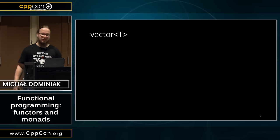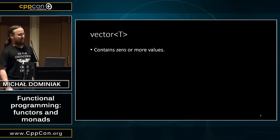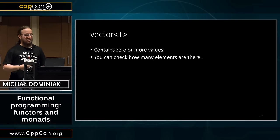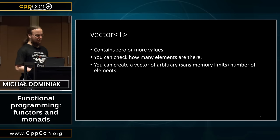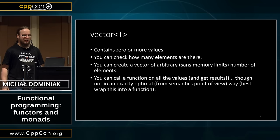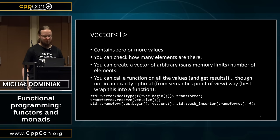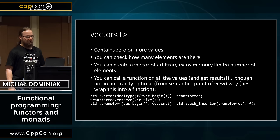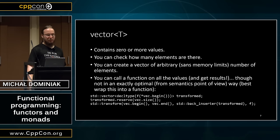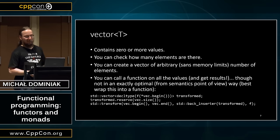Next we have a vector. A vector contains zero or more values. You can check how many values are there. You can create a vector of an arbitrary number of elements. And you can call a function on all the values — that looks something like this. You create a vector, reserve some space in it, and call a standard algorithm. Again, it's good to have this in the form of a function so you don't have to repeat yourself every time.